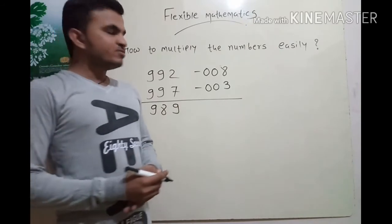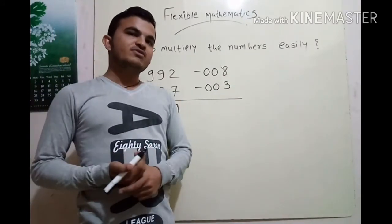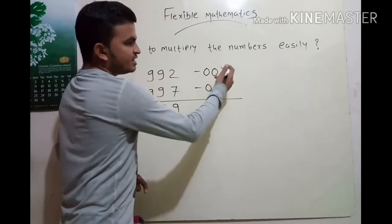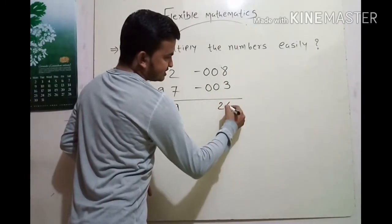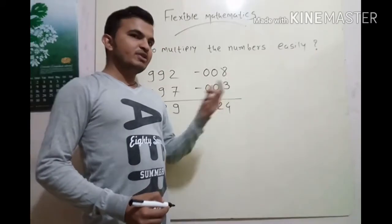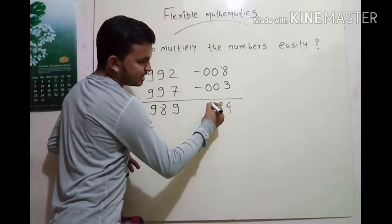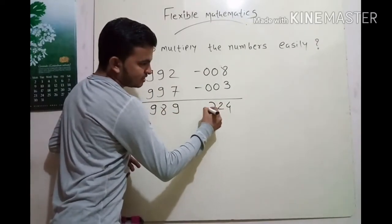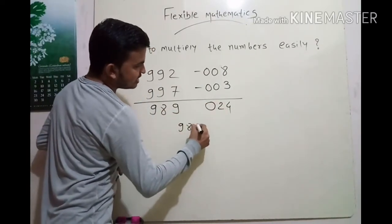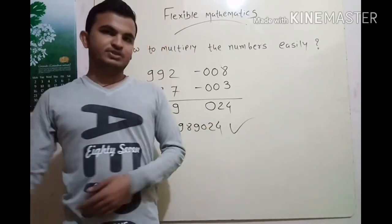Now we multiply 8 and 3: that is 24. But as required, we need 3 digits here, so one digit is missing — we add a 0, making it 024. So the final answer is 989024.